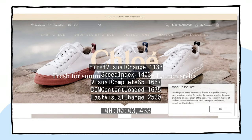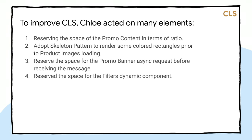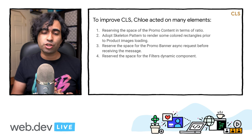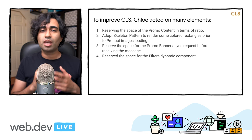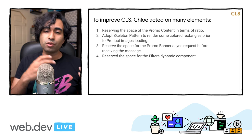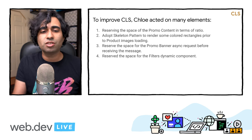Here's the overall impact of these changes on desktop: the above-the-fold content is relatively stable and offers a much better user experience. Cumulative layout shift is in the green at zero in Lighthouse. To improve CLS, Chloe acted on a number of elements: reserving space for promo content, setting width and height dimensions on images, adopting a skeleton pattern, reserving space for promo banner requests, and reserving space for the filters dynamic component.